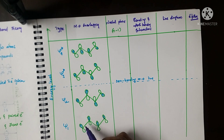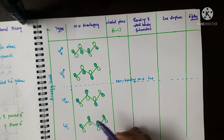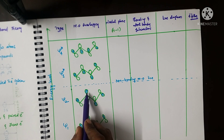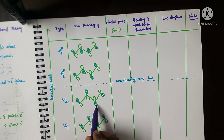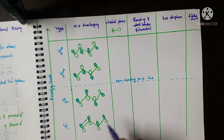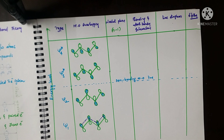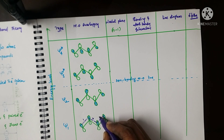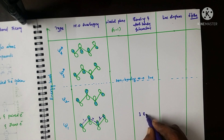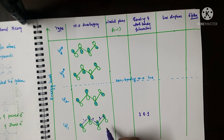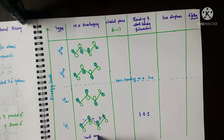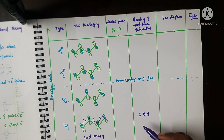Bonding interactions take place between same-phase lobes. Anti-bonding interactions take place between upward and downward direction overlapping. In psi 1, there are three bonding interactions and no anti-bonding interactions. Therefore, psi 1 is the first bonding molecular orbital and has the lowest energy level, with three bonding interactions total.